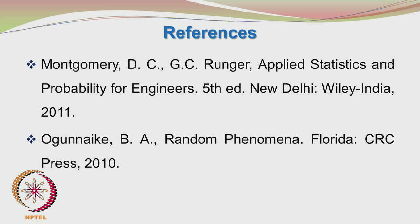Hello, welcome back to the course on statistics for experimentalists. Today, we will be looking at random samples and the sampling distribution of the mean. The prescribed textbook for this course is the one written by Montgomery and Runger, and I also refer to Ogunayake's book on random phenomena. The notation I am following is from Montgomery and Runger's book.